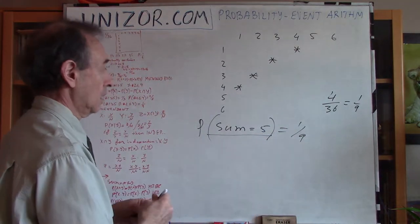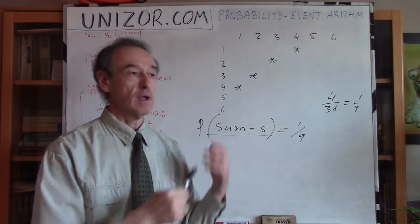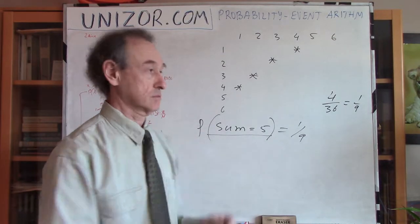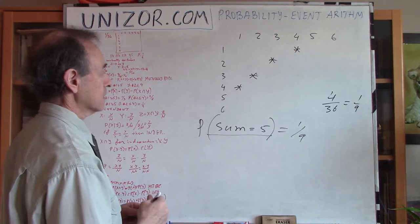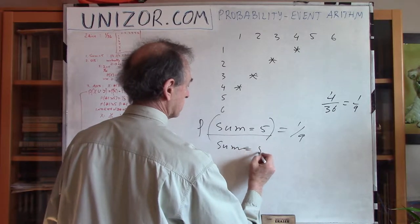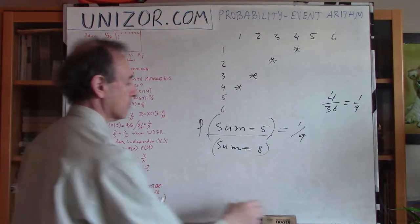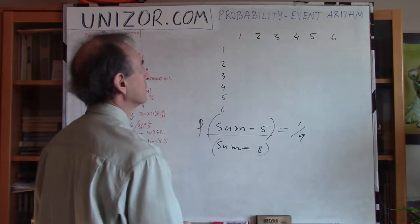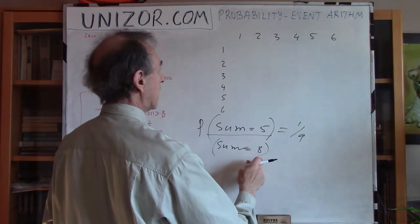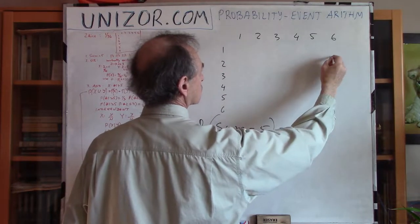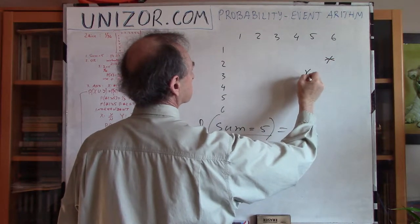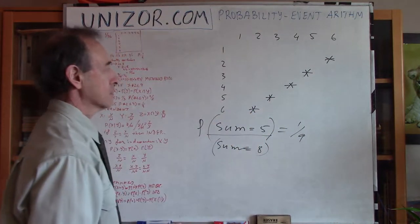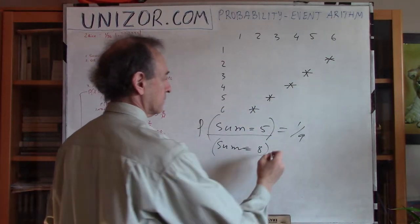Now let's consider another event: the sum of two dice equals eight. For a sum of eight, the combinations are: two and six, three and five, four and four, five and three, and six and two — five elementary events in total, giving a probability of 5/36.